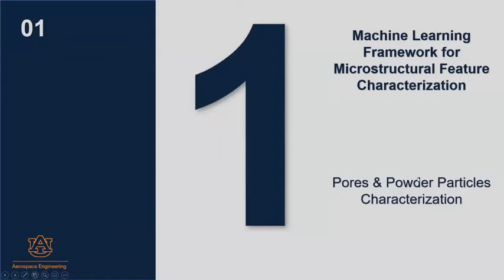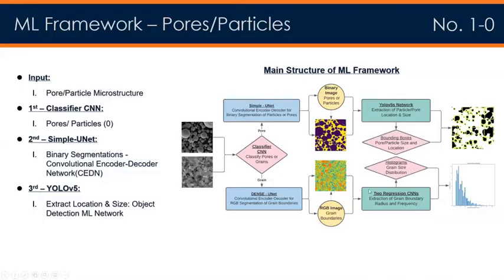For pores or particles, the initial image is passed to the classifier CNN. Once it recognizes a pore or particle, it takes the top path. The second machine learning network is an optimized convolutional encoder-decoder network called the Simple Unit. This encoder-decoder network produces binary segmentations of the pores or particles, describing defect locations using black pixels and surrounding space as white pixels. These binary segmentations are then fed into an object detection network called YOLO V5, which outputs the final location and size of each defect as enclosing bounding boxes.